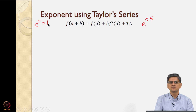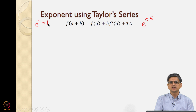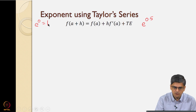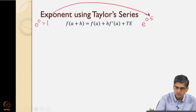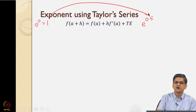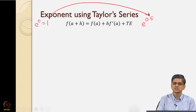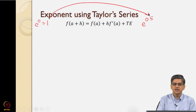Maclaurin series, if you recall from your 10th or 11th standard math, is nothing but when you use Taylor series on e to the power x, you get the Maclaurin series approximation. So we want to go from e to the power 0 to e to the power 0.5. We can do that by going in one single step, but if we want to go in one single step, we need more and more terms in the Taylor series. Alternatively, we do not have to go in a single step — we can go in multiple steps.